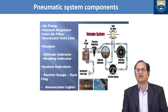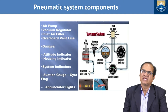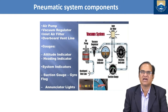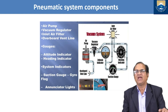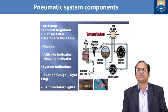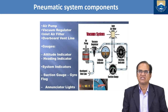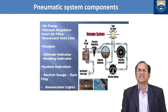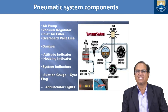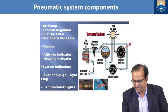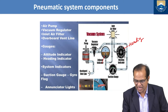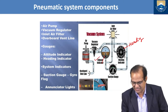Pneumatic system components include: the air pump, used to provide pressure for the supplied air; the vacuum regulator, which regulates the pressure and amount of air circulated in the system; inlet air filters, which filter and remove impurities; the overboard vent line; gauges; attitude indicator showing rolling and pitching; and heading indicator showing direction — north, south, west. There is also a suction gauge.